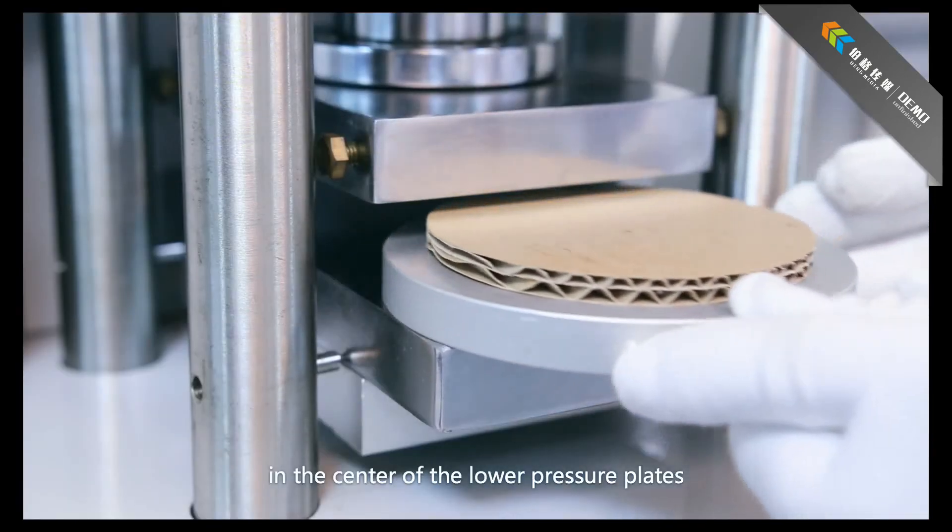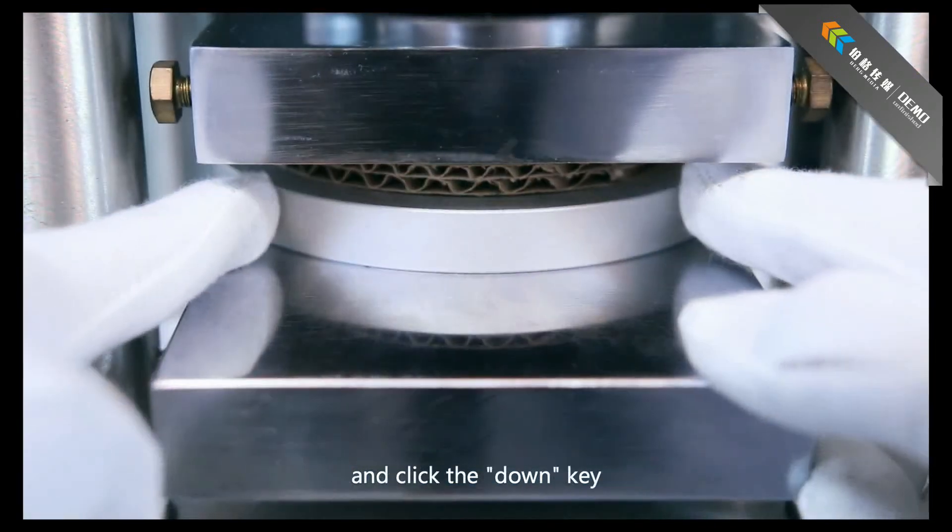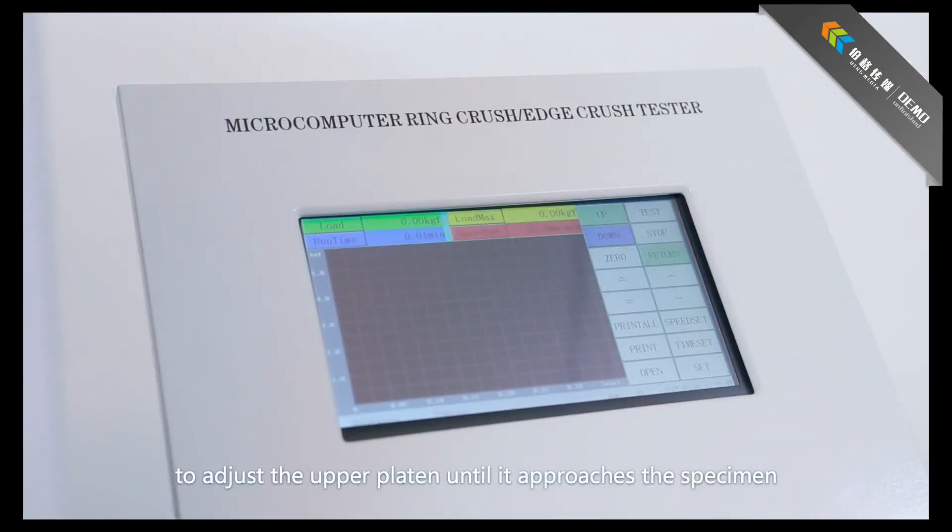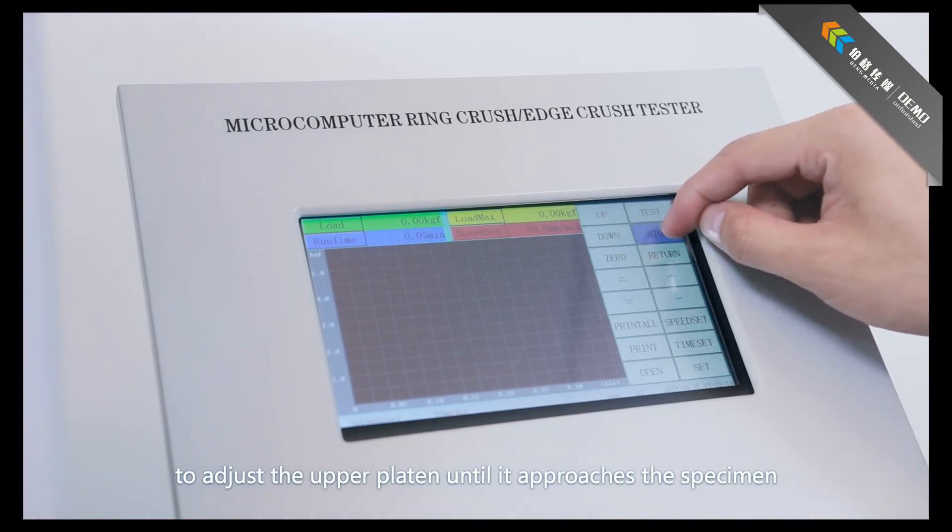Place the specimen holder in the center of the lower pressure plates, and click the down key to adjust the upper platen until it approaches the specimen.